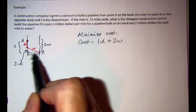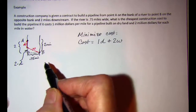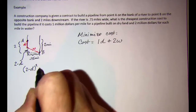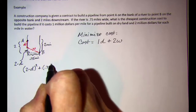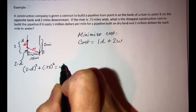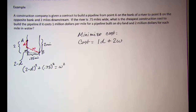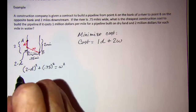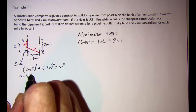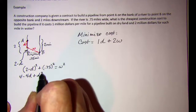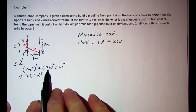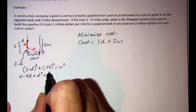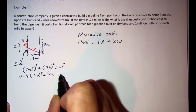Now we have all 3 sides of our right triangle and we can use the Pythagorean theorem: (2 − D)² + (0.75)² = W². Squaring the binomial gives 4 − 4D + D², and squaring 3/4 gives 9/16. So: 4 − 4D + D² + 9/16 = W².